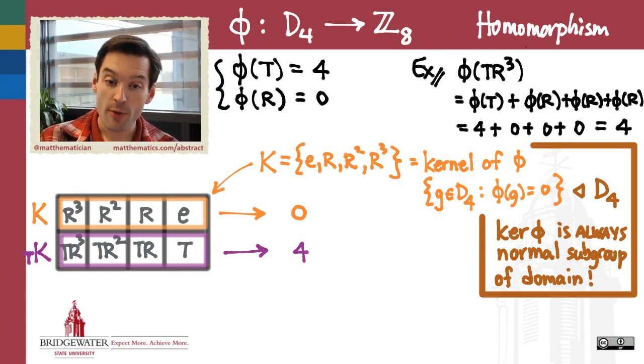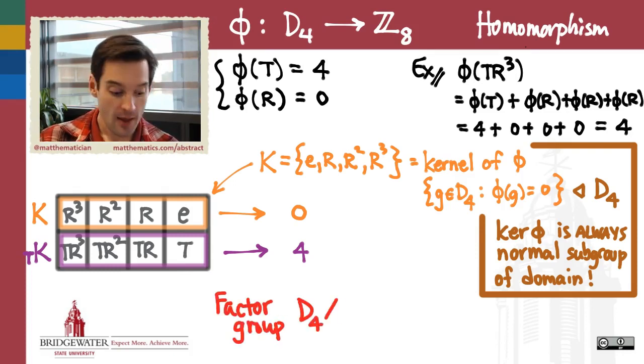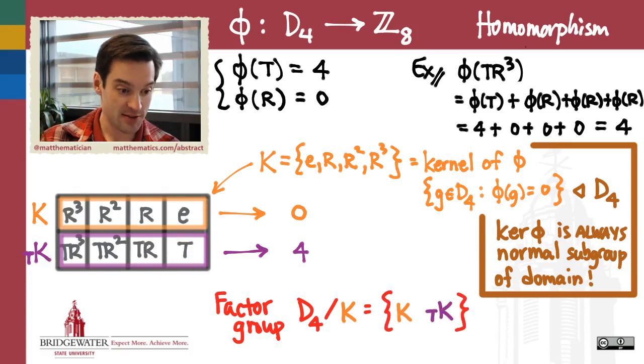We can use homomorphisms to find normal subgroups just by taking the kernel. And anytime I have a normal subgroup, I also have a factor group—the group that consists of the cosets of that normal subgroup inside of the larger group. In this example, the original normal subgroup here, the kernel of φ, happens to have index 2. And so the factor group consists of the two cosets k and tk, for example, if that's how we want to represent them.